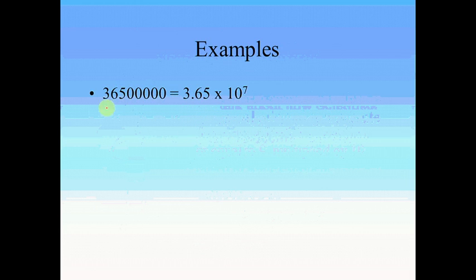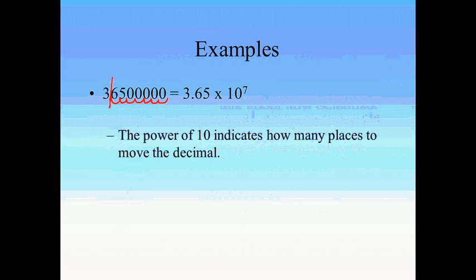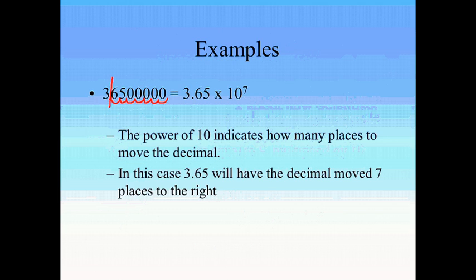So let's look at some examples. Let's look at 36.5 million. Well, 36.5 million would be expressed as 3.65 times 10 to the 7. And how do we get from one to the other? Well, we're looking for scientific notation to have the decimal in between the 3 and the 6. So how do we decide on the power of 10? Well, that's going to be 1, 2, 3, 4, 5, 6, 7. That's how we get to our decimal place. And so that means we need to multiply 3.65 times 10, 7 times, or times 10 to the 7th, in order to get to the actual number in decimal notation. So the power of 10 indicates how many places to move the decimal place from this number to get it into a decimal number. In this case, the 3.65 would have the decimal moved 7 places to the right in order to make the 36.5 million.